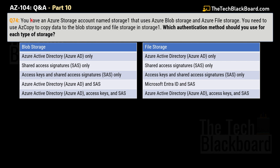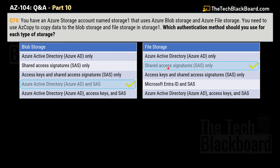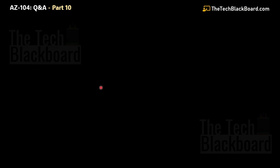Question number 74 is the older version of question 73. I'm including it in case you encounter the older version on the exam. The question and most options are the same, but there is a slight change: for Blob Storage, option D says 'Azure Active Directory and SAS' instead of 'Microsoft Entra ID and SAS'. If you get the older version, choose Azure Active Directory and SAS. For File Storage, the answer remains Shared Access Signatures only. Azure Active Directory has simply been renamed to Microsoft Entra ID.